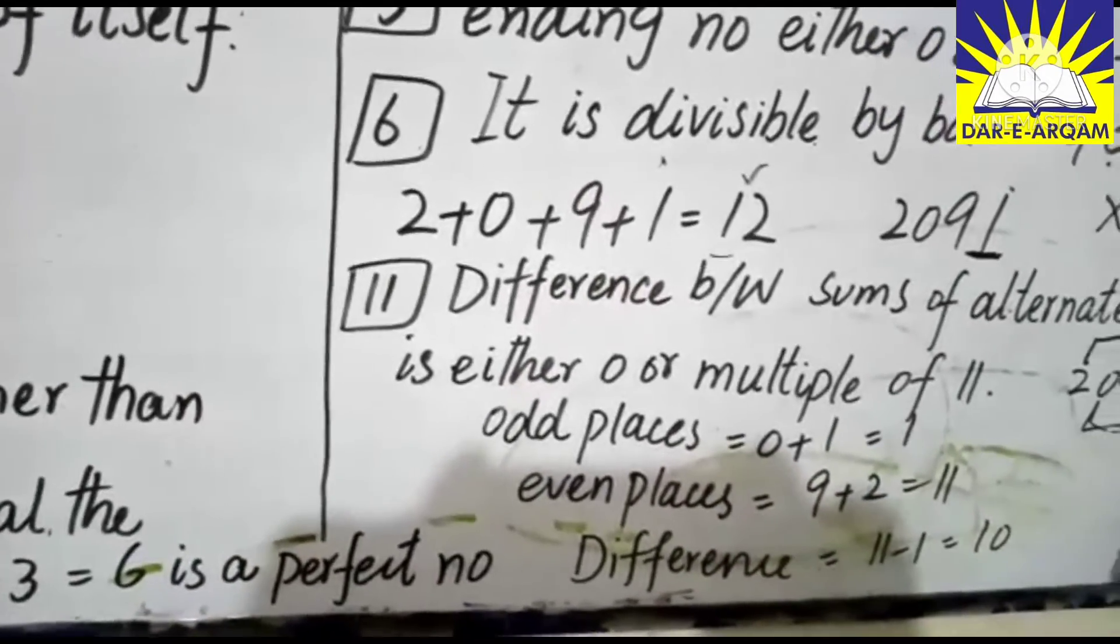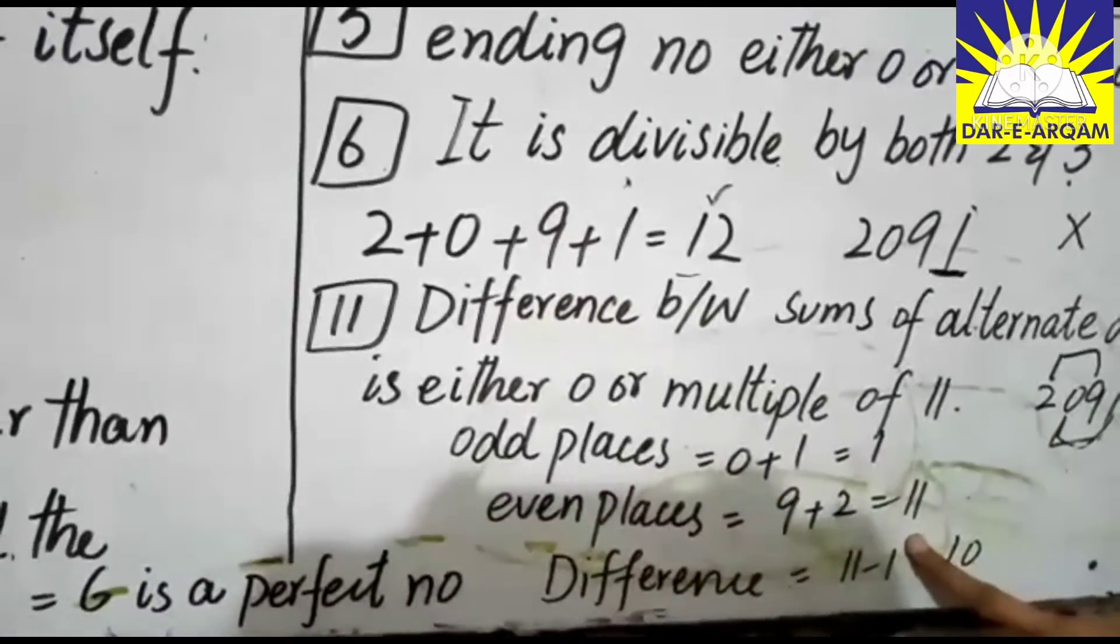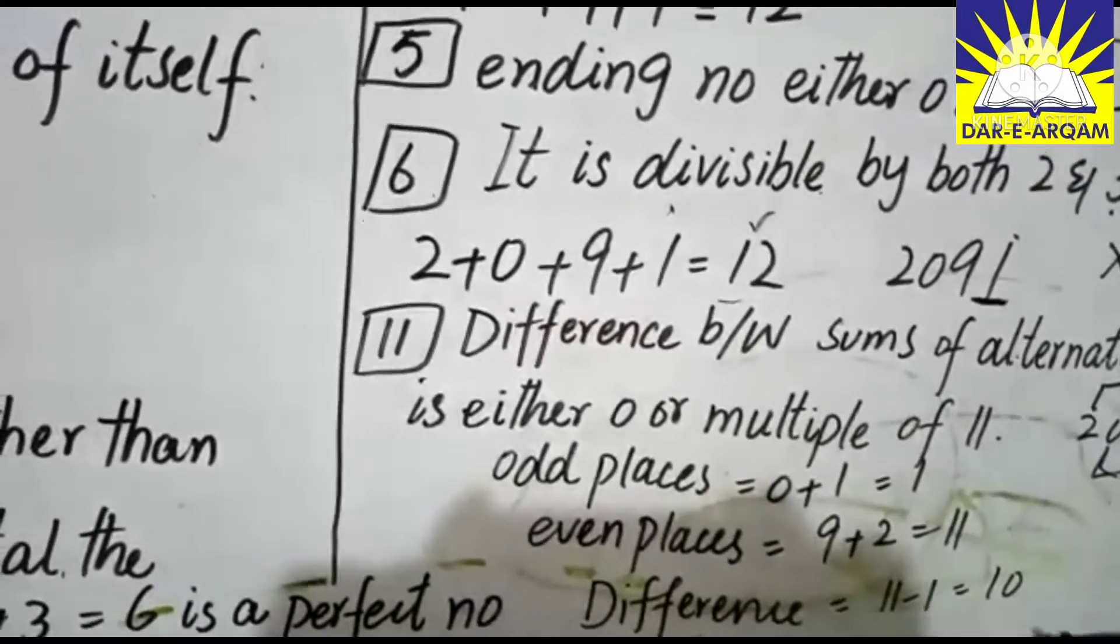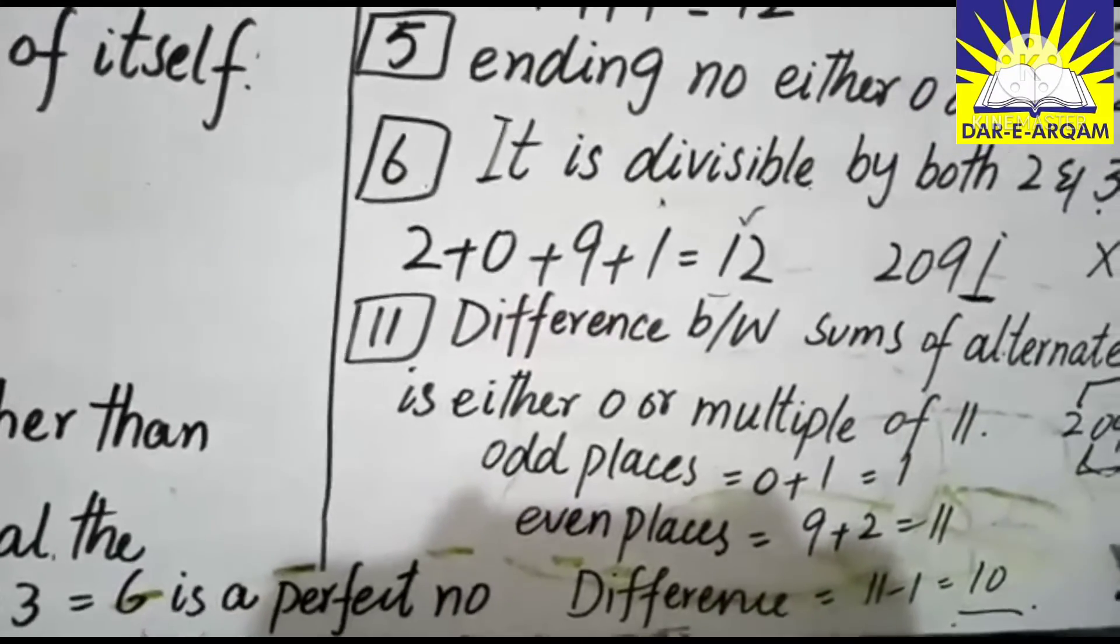0 plus 1 equals 1. 9 plus 2 equals 11. 11 minus 1 is 10, but this number is divisible by 11. This is why this number is not divisible by 11.